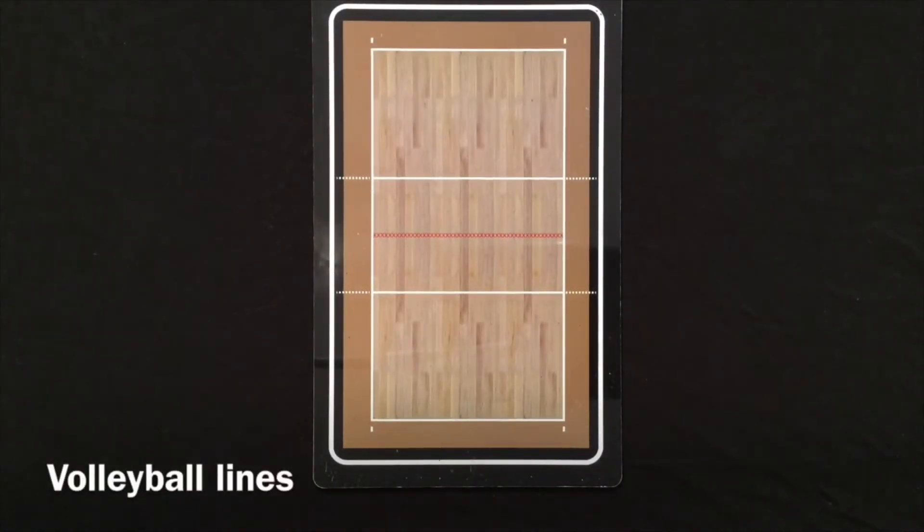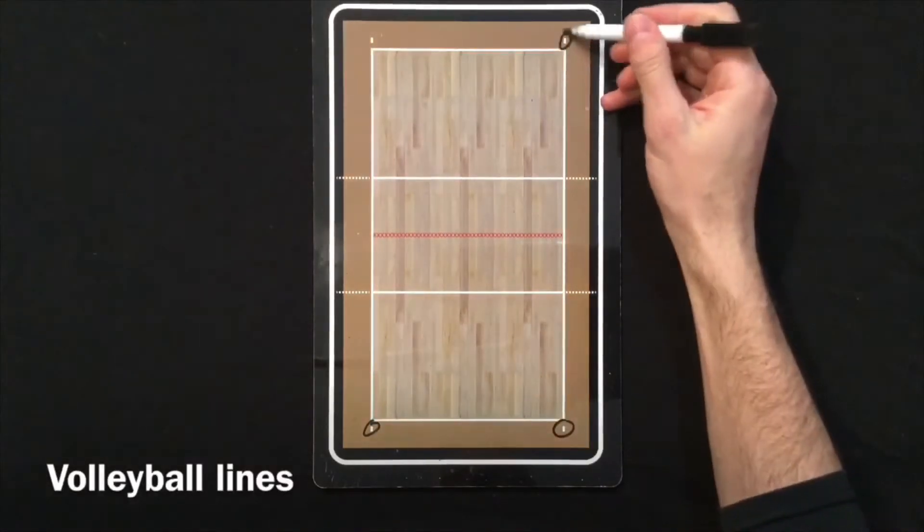There are a few more smaller lines that are kind of fun to talk about. The first ones are these four lines in the corners. I believe these are four.